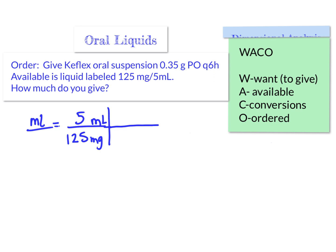Now, are there any conversions needed? The order is in 0.35 grams, but the available is in milligrams, so they don't match — I need to do a conversion. I put milligrams on the next fraction, and I know there are 1,000 milligrams in 1 gram. Now I put my order in: 0.35 grams. Crossing out grams and milligrams, I'm left with mL, which is what I want.